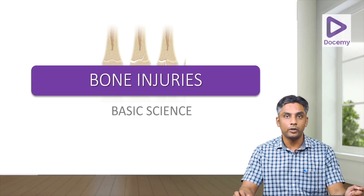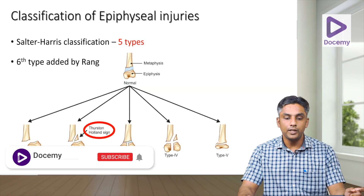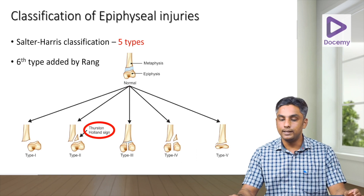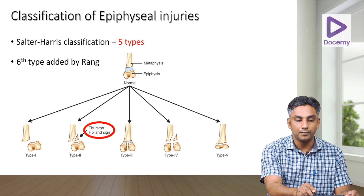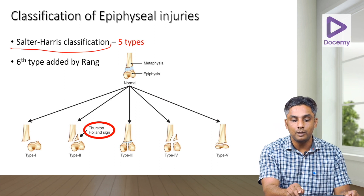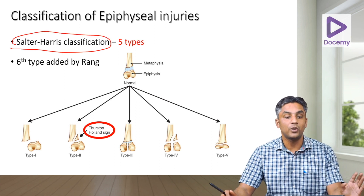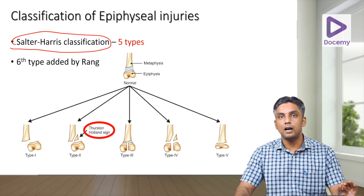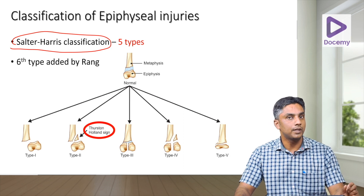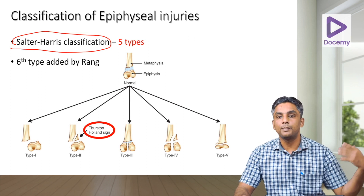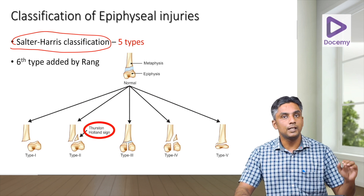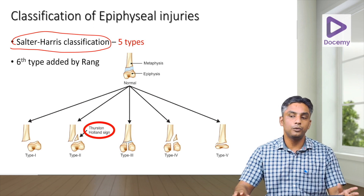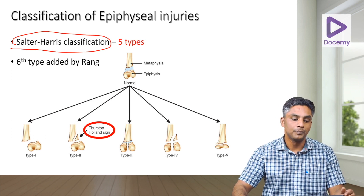Among the basic science topics, we'll be dealing with bone injuries. Starting with epiphyseal injuries and their classification: the buzzword here is Salter and Harris — a big name in orthopedics that you must not forget. There are five types of epiphyseal injuries described by Salter and Harris, and one additional sixth type added by Rang, so overall six types.